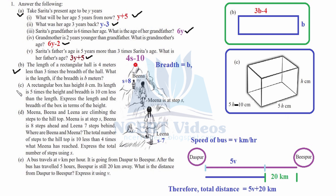Part c: a rectangular box has height h centimeters. Its length is 5 times the height, and breadth is 10 centimeters less than the length. Express the length and breadth in terms of height. Length is 5 times h, therefore 5h centimeters. Breadth is 10 centimeters less than the length, so breadth is 5h minus 10 centimeters.